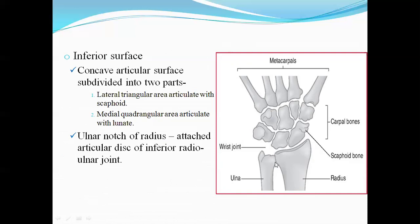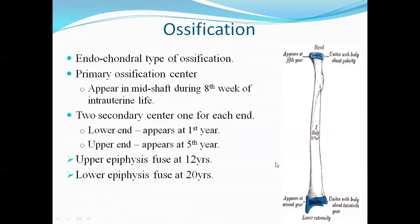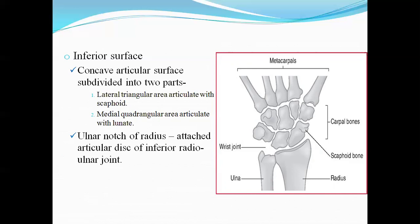The medial surface has the ulnar notch, which articulates with the head of the ulna to form the inferior radioulnar joint. The inferior margin gives attachment to the articular disc of the inferior radioulnar joint.